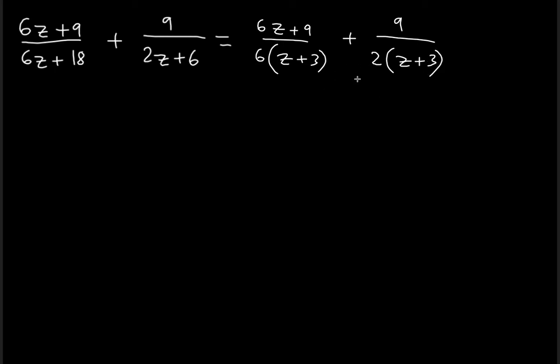And that will help us find the LCD in order to combine these two fractions into a single fraction. Notice that the LCD is almost there, except here there's a 6 and there's a 2 here, so we need to multiply this denominator by 3 in order to transform it into a 6 multiplied by z plus 3.